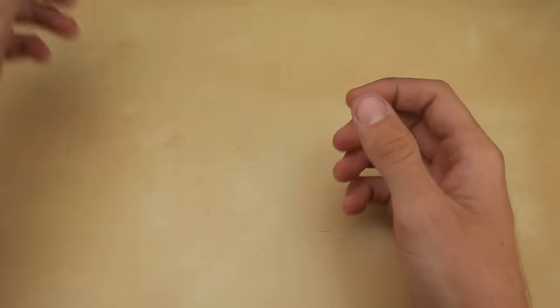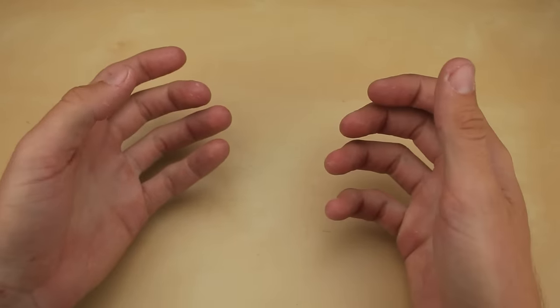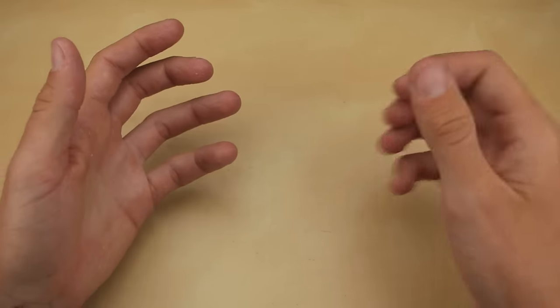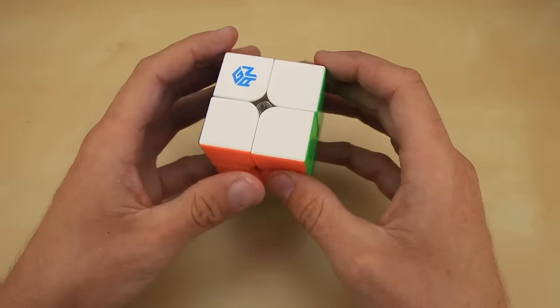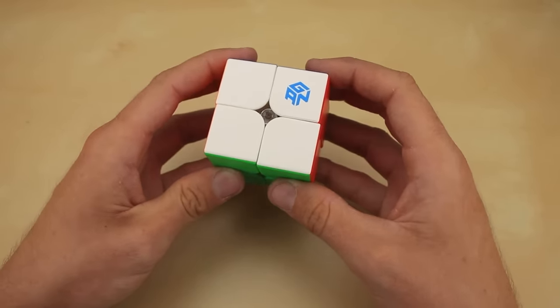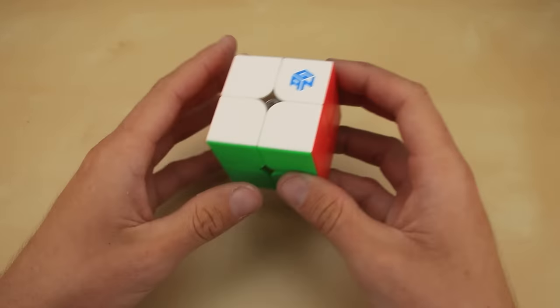Anyway, back to my quest to start a trend with Maglev in some WCA cube. So since Skewb is obviously no longer an option, I'm going to turn my attention to the next obvious choice, 2x2. It's a nice simple puzzle with lots of room on the inside, and most importantly, no one has made a Maglev version yet.